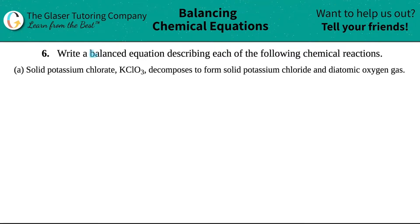Number six, write a balanced equation describing each of the following chemical reactions. Letter A says solid potassium chlorate, which is KClO3, decomposes to form solid potassium chloride and diatomic oxygen gas.